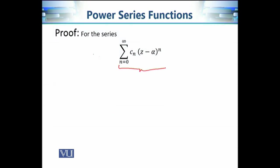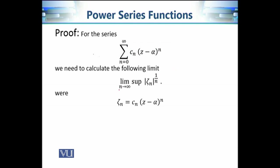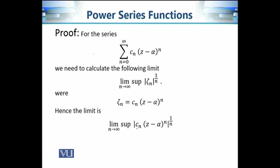Now let's use the root test on our infinite series. The terms are zeta_n, which in this case is C_n times (Z minus alpha) raised to power n. We want to calculate the limit superior of the modulus of zeta_n to the power 1 over n. The expression becomes the modulus of C_n times (Z minus alpha) raised to power n, all to the power 1 over n. Since Z minus alpha does not involve n, it acts as a constant for this limit.